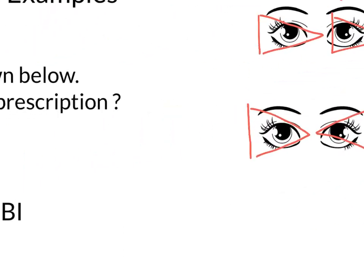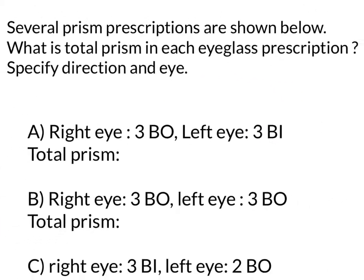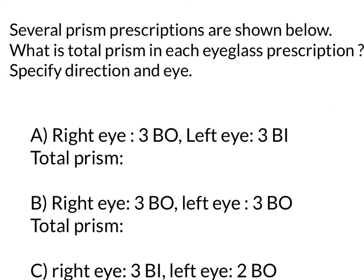Let's begin with question A. The prescription in the right eye is 3 base out, and the left eye is 3 base in. Do you add the two or do you subtract them? Well, the answer is that you subtract them. So the answer is just 0 prism total, because if you draw it out or imagine it, you can see that the prisms in this case are pointing in the same direction. So you get 0 — you subtract them.